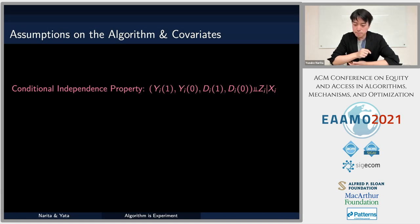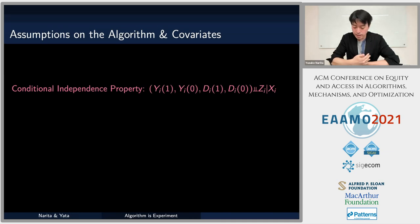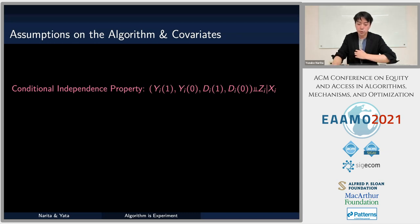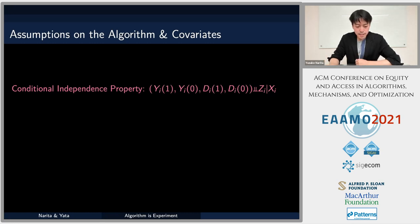The key property is the conditional independence assumption: whether each person gets the treatment recommendation z or not depends only on observable characteristics in x. Conditional on x, the treatment recommendation z must be independent from anything else, especially potential outcomes and potential treatment assignment. Importantly, this is often a true property guaranteed by the construction of the algorithm — it is closer to an underlying fact than an assumption.